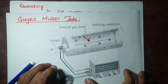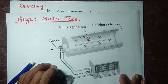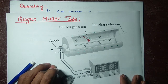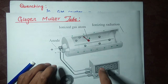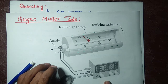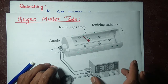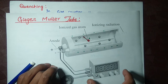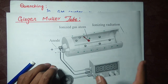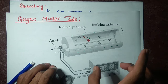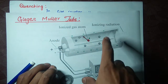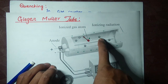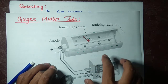When the false electrons go to the anode, they go from the anode to the counter and make a pulse, which is known as a false pulse. These false electrons make a false count. To remove this false count, we use the quenching process.